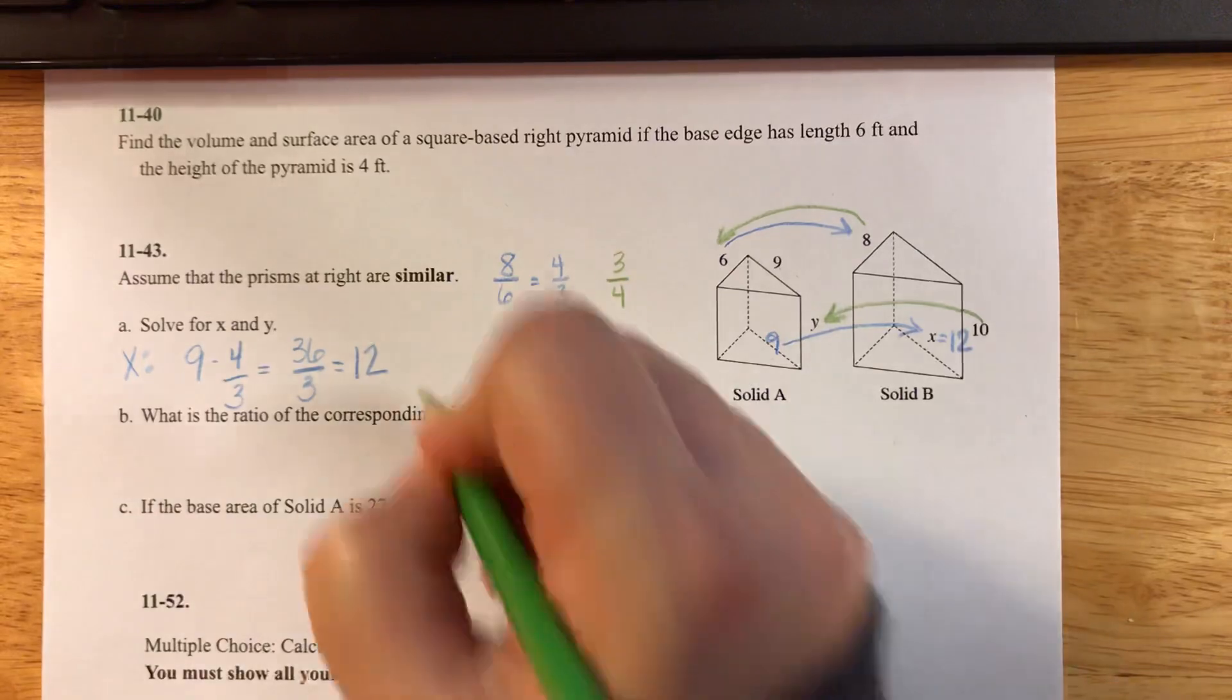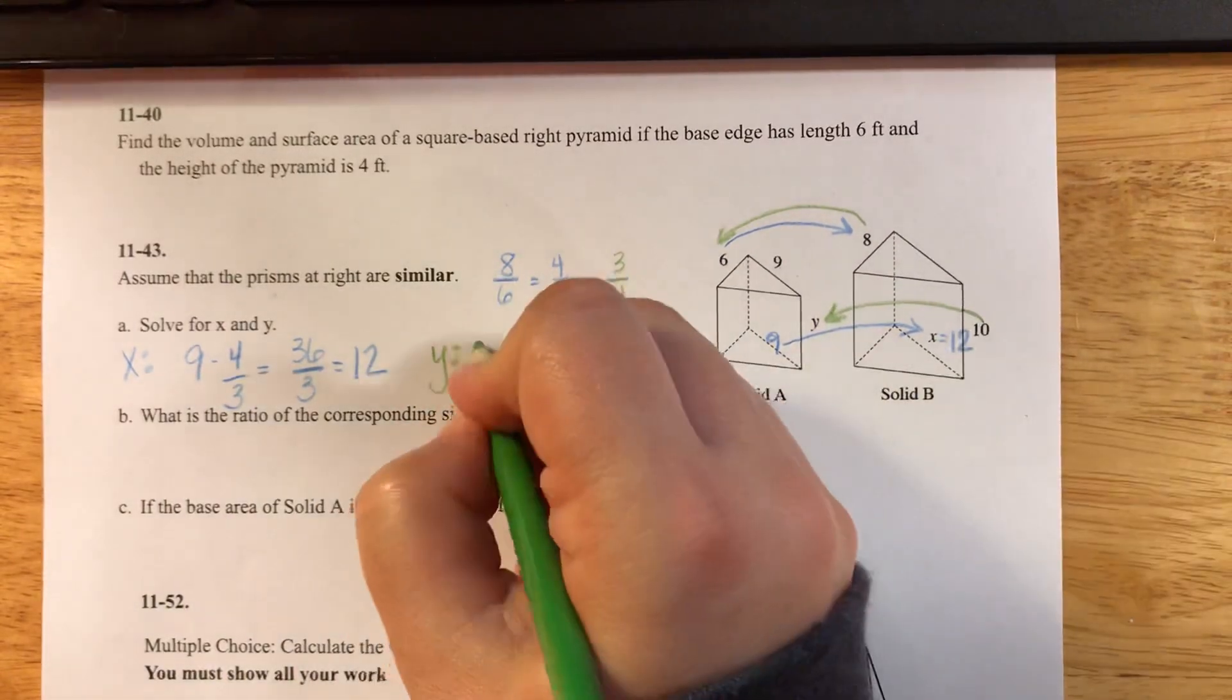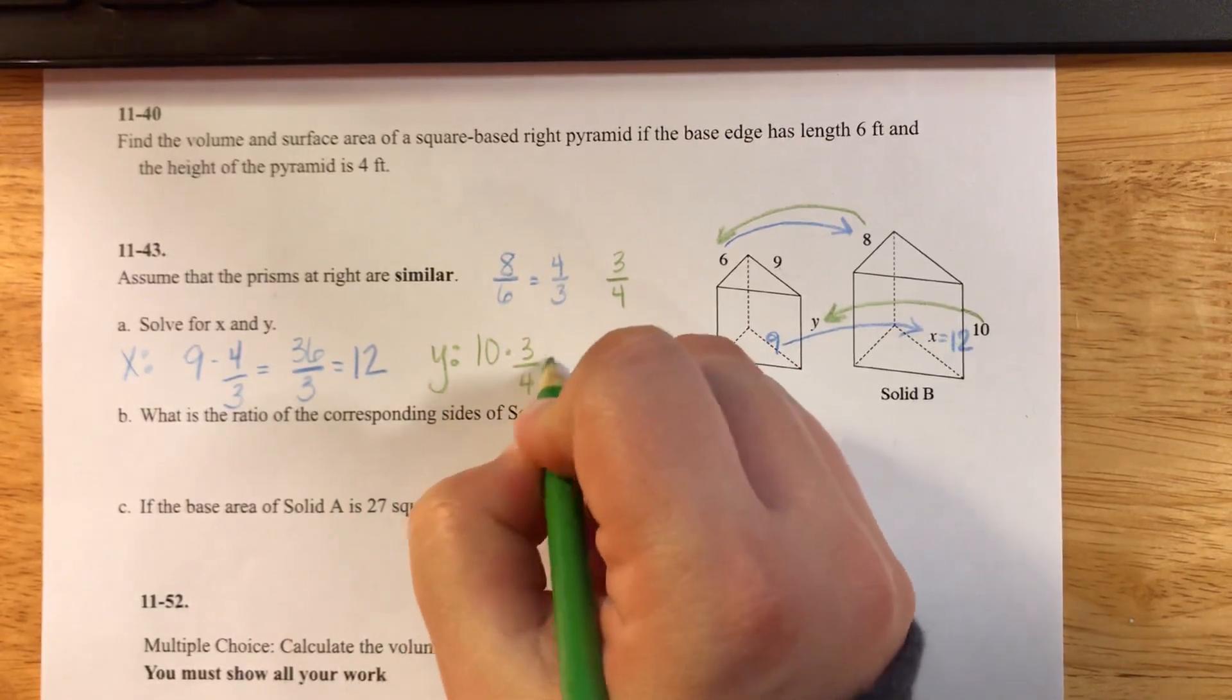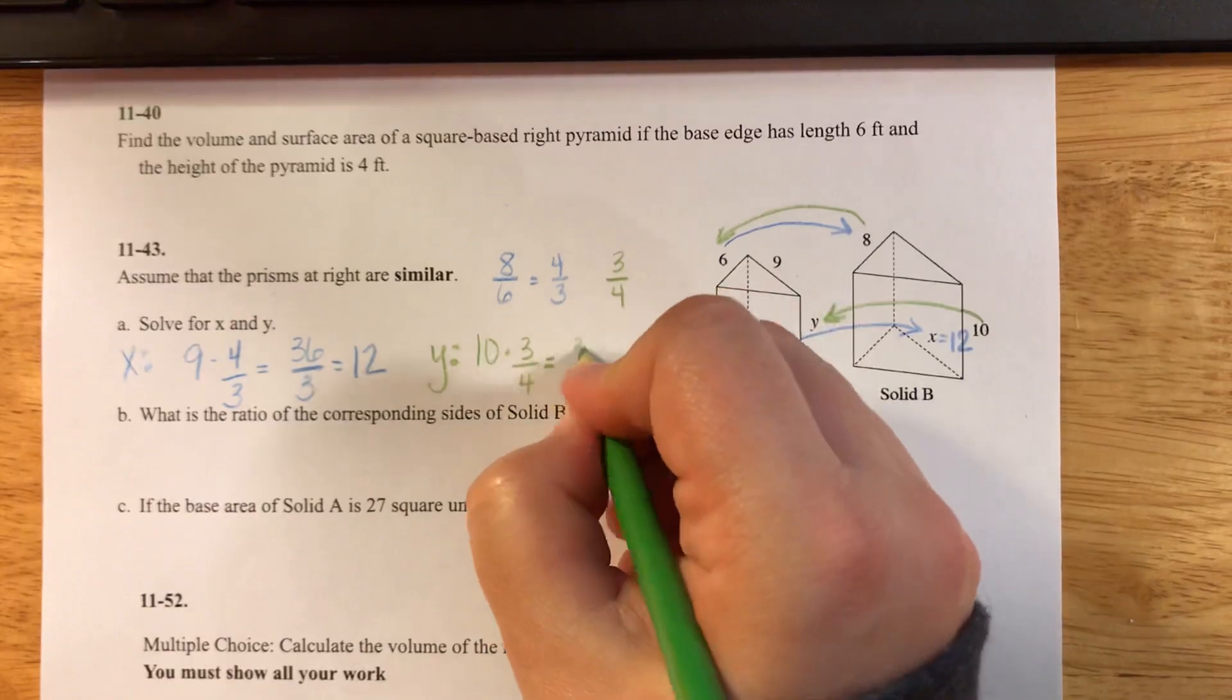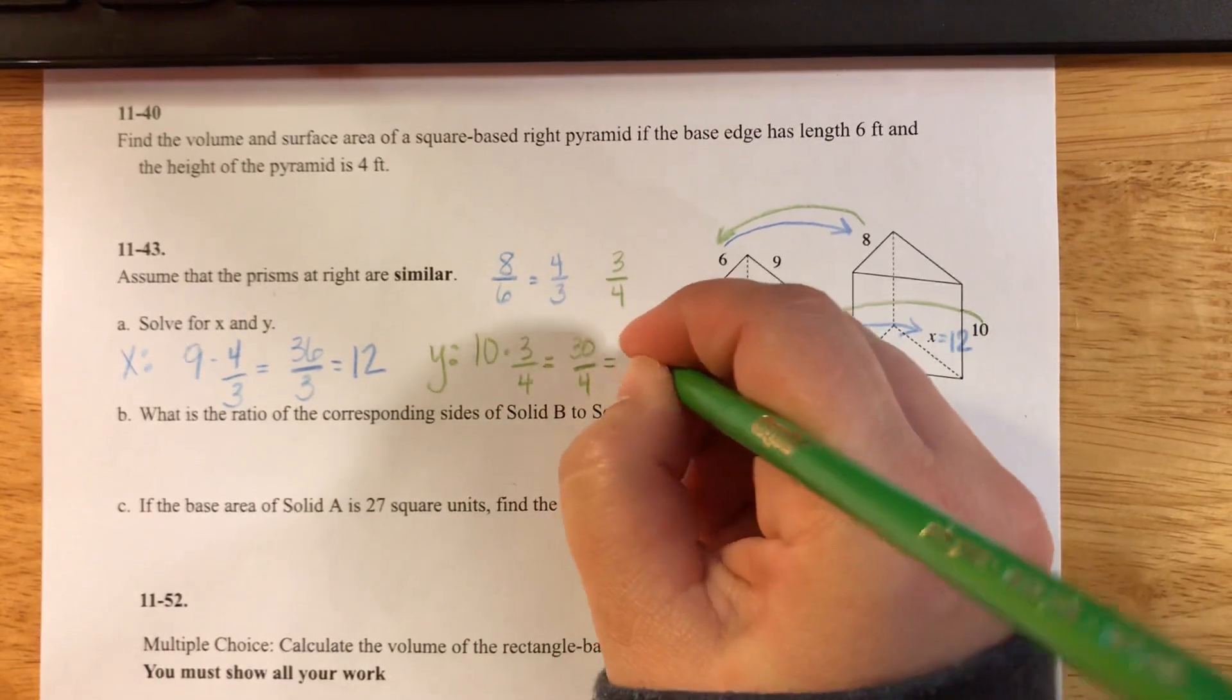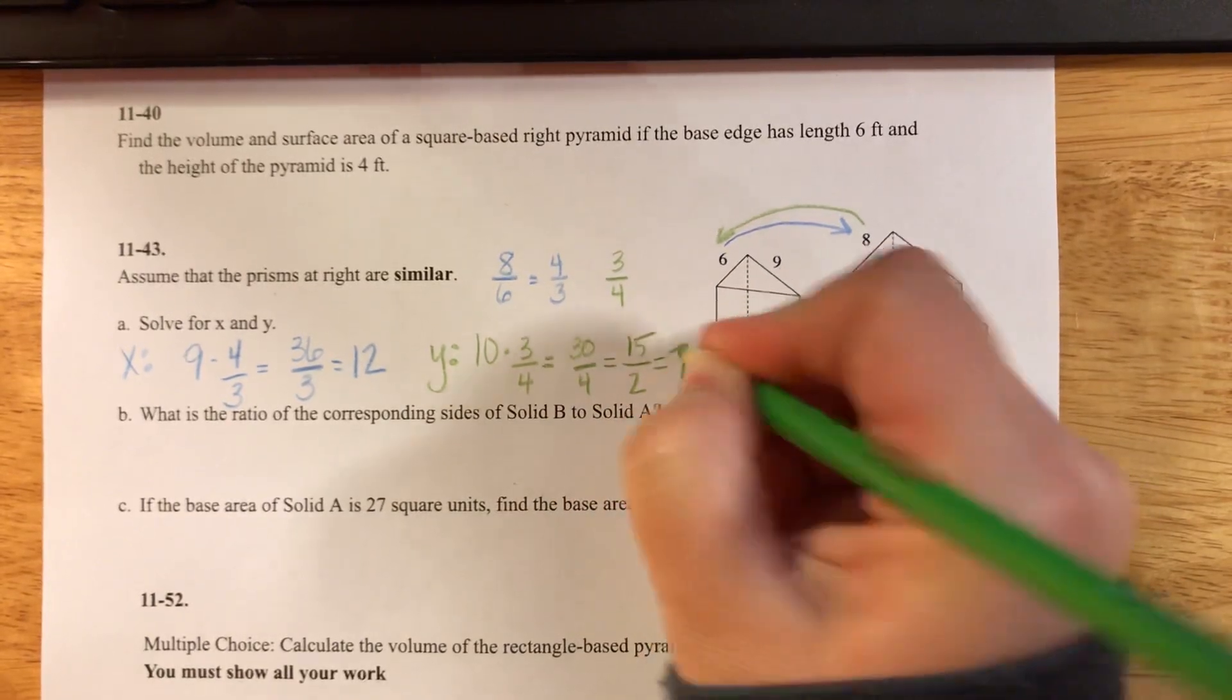To figure out y, I'm going to take 10 and I'm going to multiply that by 3 over 4. If I multiply across, I get 30 over 4, which reduces down to 15 over 2, or 7.5.